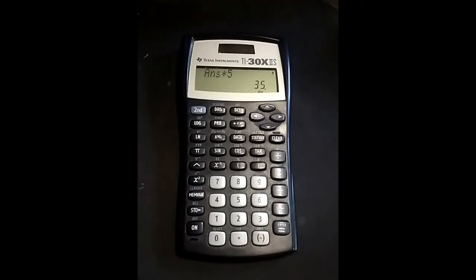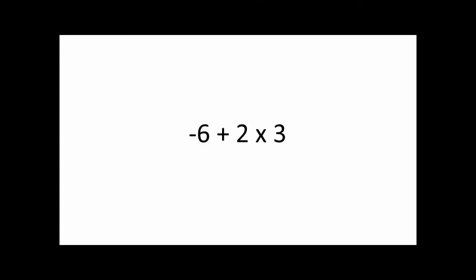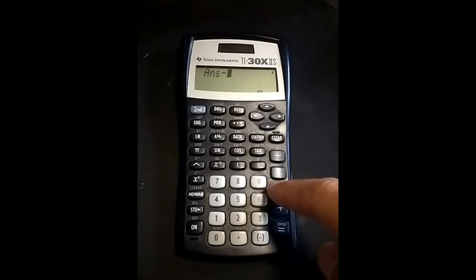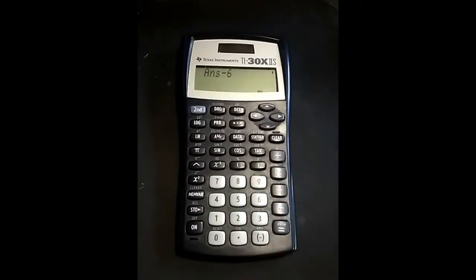Let's look at another example. Negative 6 plus 2 times 3. Again, the multiplication takes place first, and this part equals 6. And so, negative 6 plus 6 equals 0. But look what happens when I enter this into the calculator. Minus 6. Wait. Why is the previous answer being pulled into this expression?